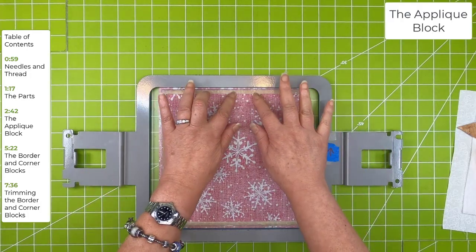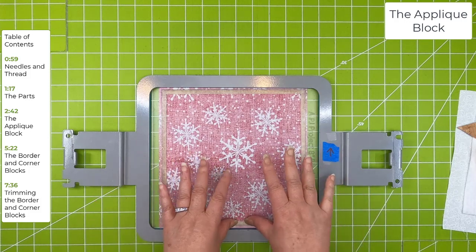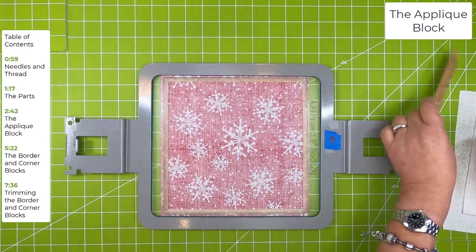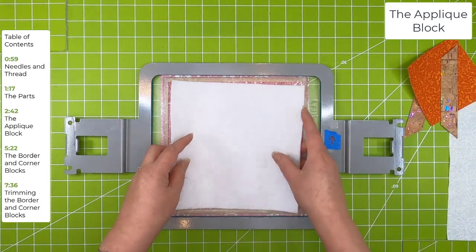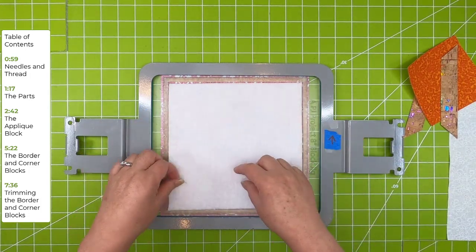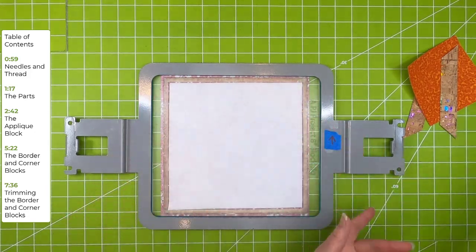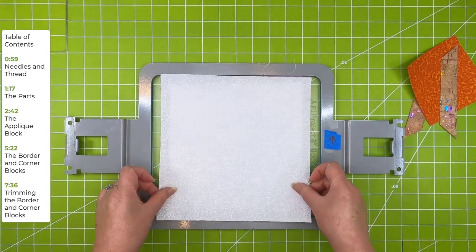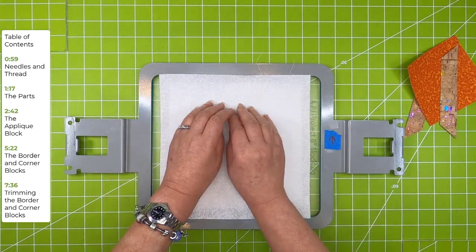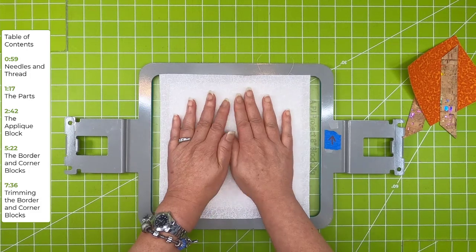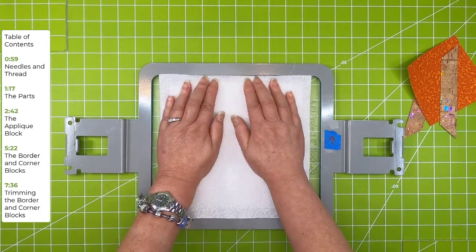I'll set up my jig just standard. So here's my back block, good side face down. Then my batting, which is cut smaller than my hole. That's just gonna sit in there. And then my top fabric. So this is all just standard. And when I put my top block down, I press from the inside to the outside.